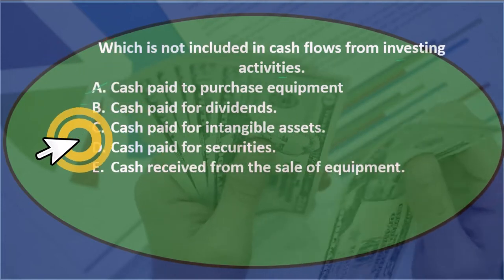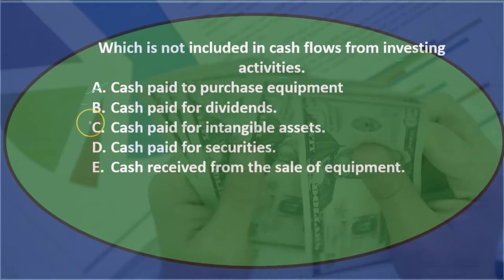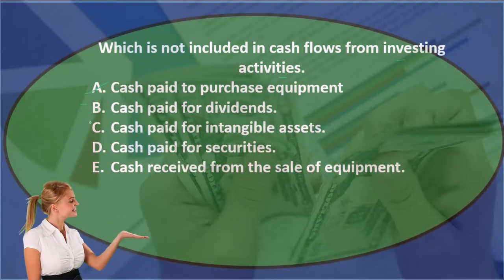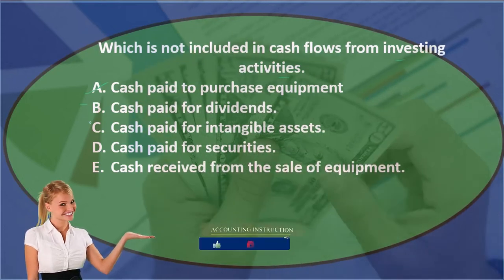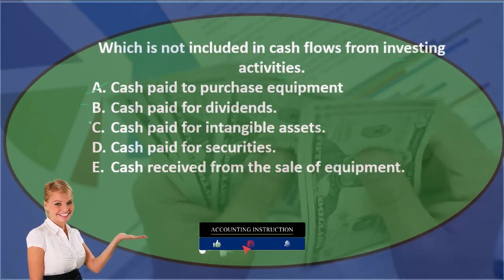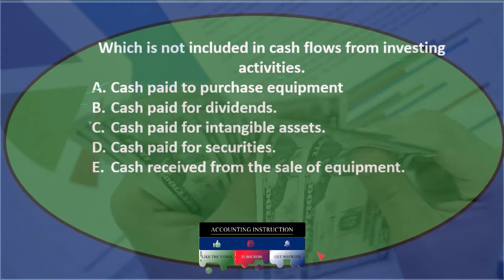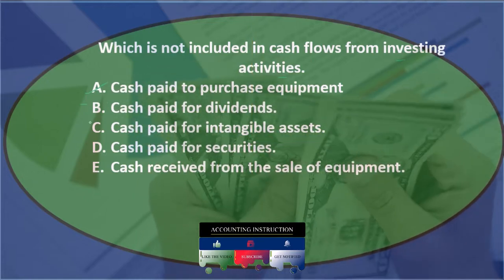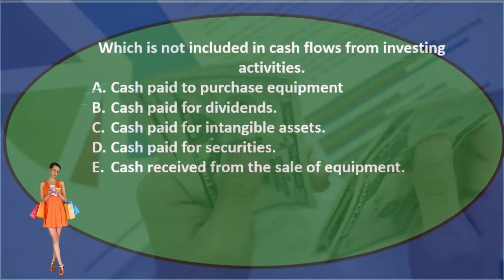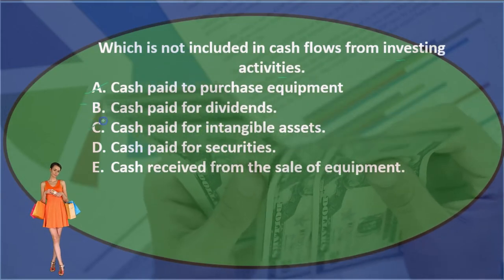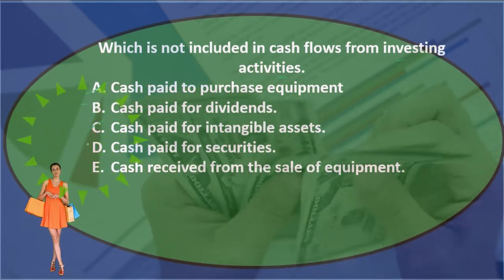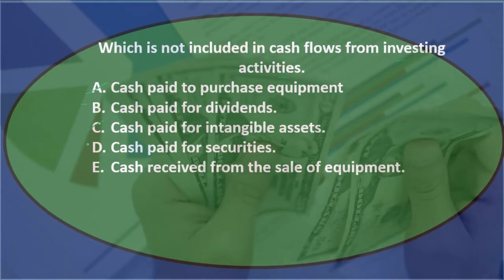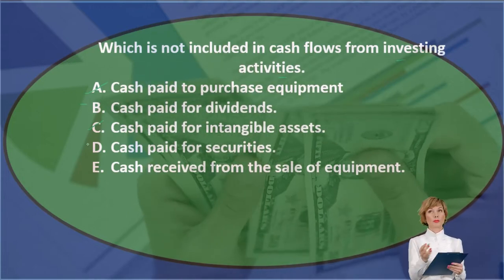Option C: cash paid for intangible assets. We would debit intangible asset and credit cash. Are either of those income statement accounts — revenue or expense? No, so it's not an operating activity. Did we buy something of long-term value? Yes, we bought an intangible asset, so it looks like investing activities. It might be a little confusing because it's intangible, but it looks like investing. Option D: cash paid for securities — securities is a type of investment, so if we paid cash for an investment, that would be an investing activity.